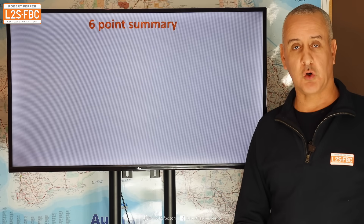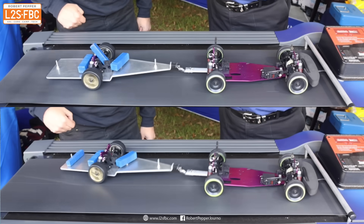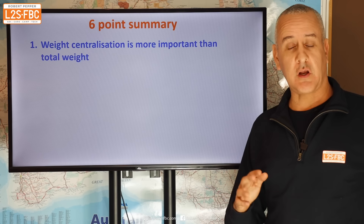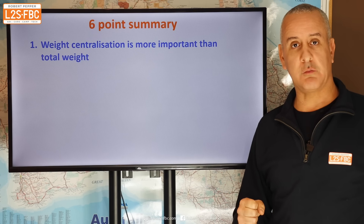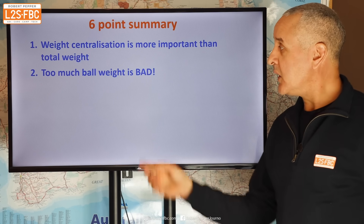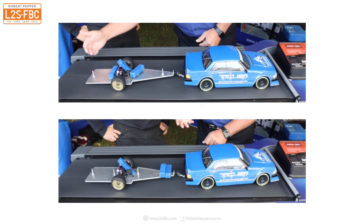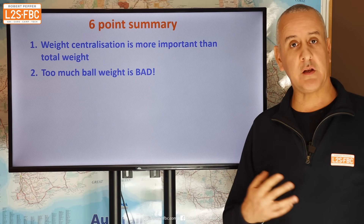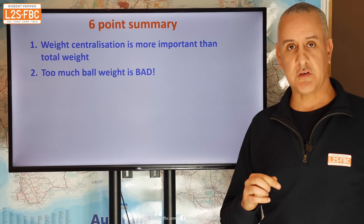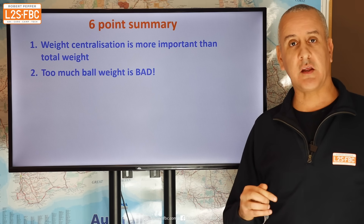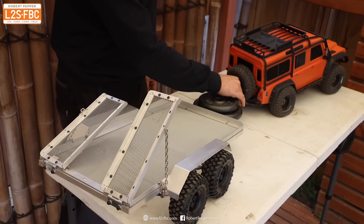Let's finish with a six-point summary of what we've learned. One: weight distribution is more important than total weight. We saw that when weights moved to the front and back the trailer became unstable, even though total weight didn't change. Also, a fairly heavy trailer with good weight distribution was actually more stable than a lighter trailer with poor distribution. Two: too much ball weight is bad. You commonly see on forums advice to keep adding ball weight for trailer sway, but there's a right amount — you can't keep adding more and expect all problems to disappear; you'll start to create new ones.